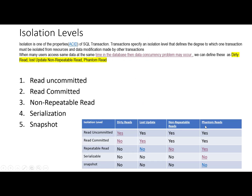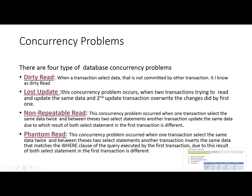The fourth concurrency problem is the phantom read. This problem occurs when a transaction selects the same data twice, and between these two SELECT statements, another user inserts data that matches the WHERE clause of the query executed by the first transaction. Due to this, both SELECT statements return different results — this is known as the phantom read.